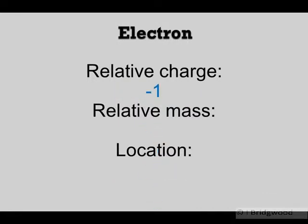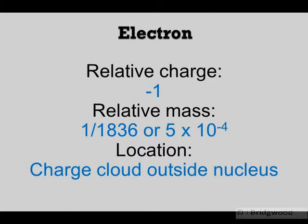Electron: relative charge minus one. Relative mass much lighter than either protons or neutrons. Sometimes you will see it as negligible or zero. It is very light. I prefer to have one eighteen thirty-sixth the mass of a proton, or you can say five times ten to the minus four. Its location is in a charged cloud outside the nucleus. We'll consider electrons in a little bit more detail when we come on to electron configuration.